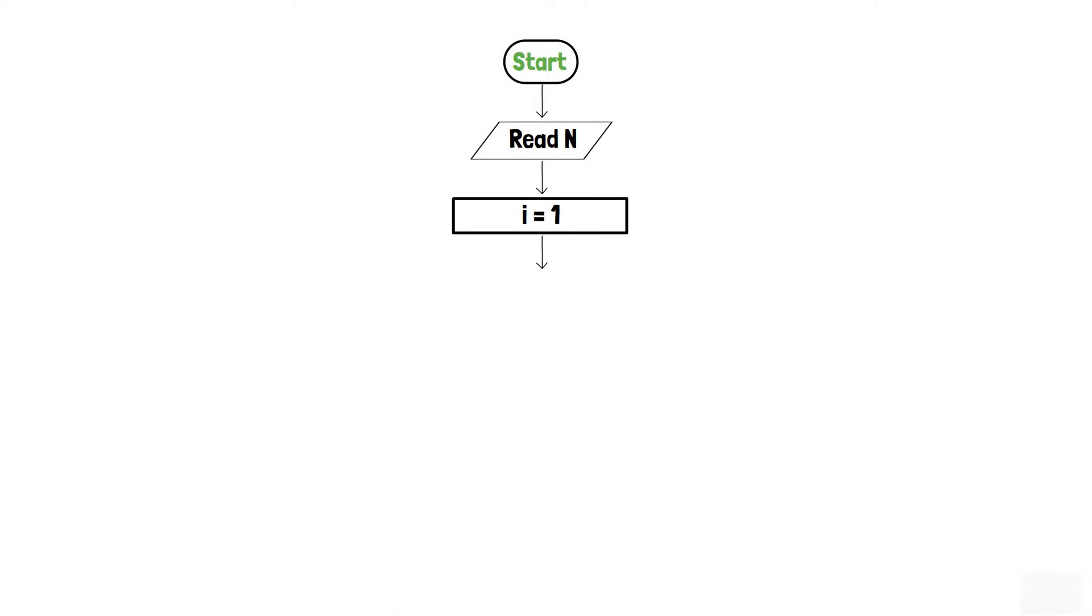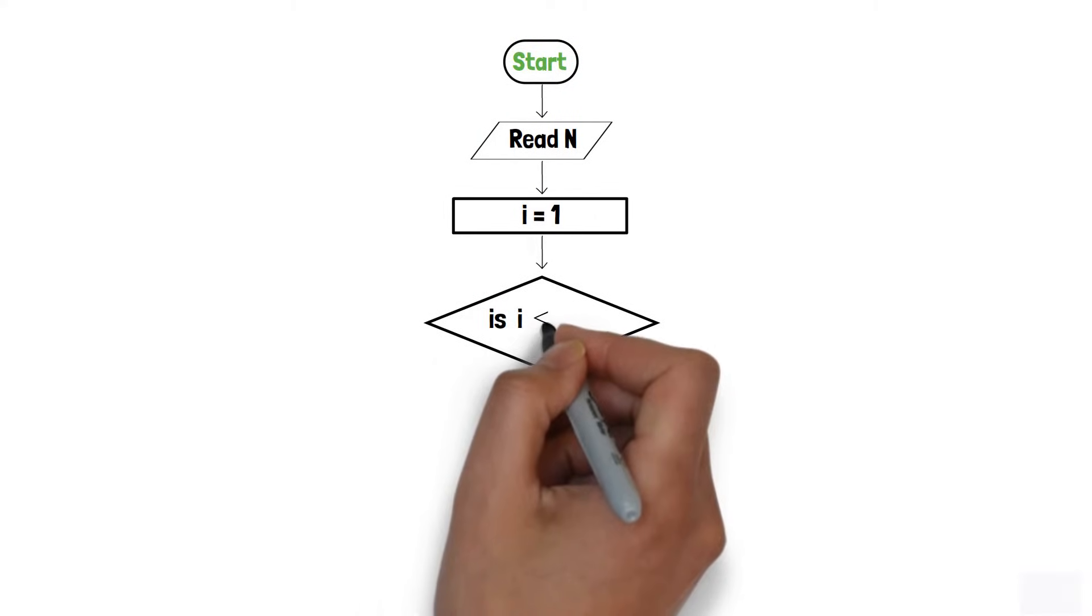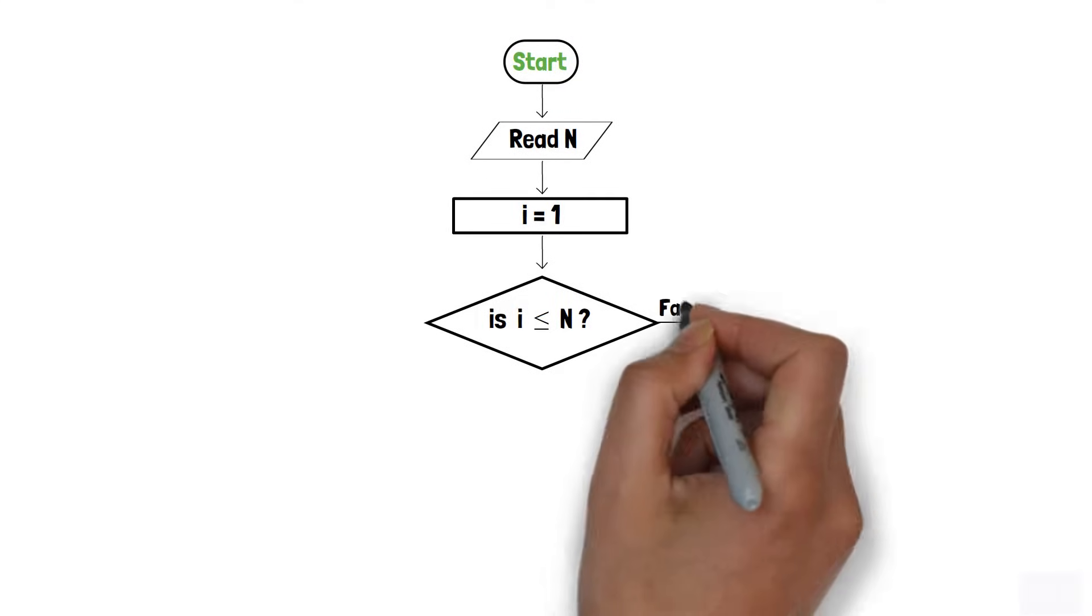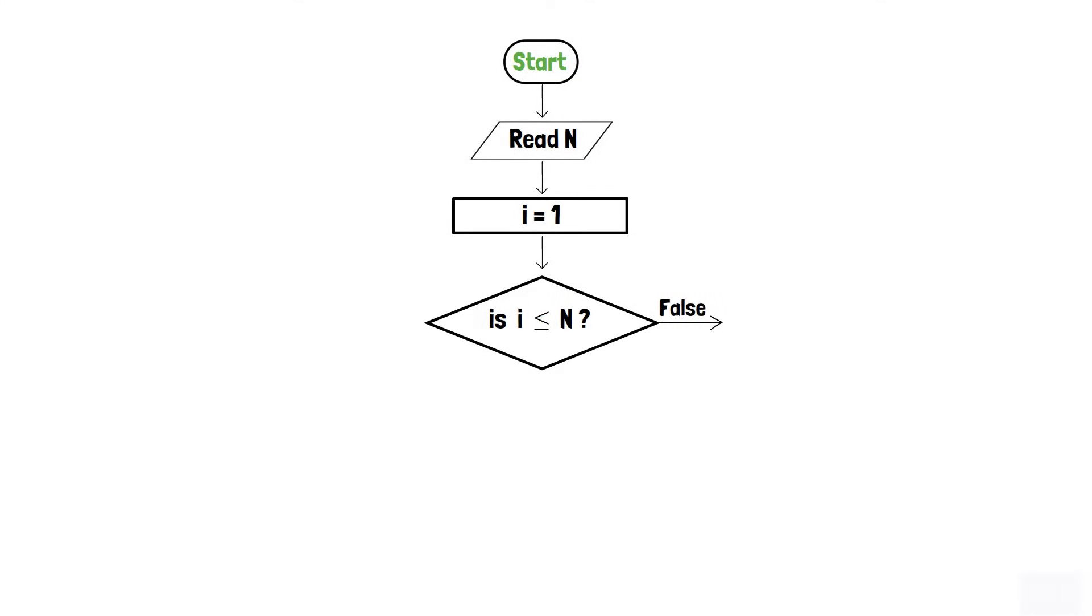Now, we will use a decision box to determine whether i is less than or equals to n or not. If not, that means i is greater than n, and thus we will end the program through the end terminator.